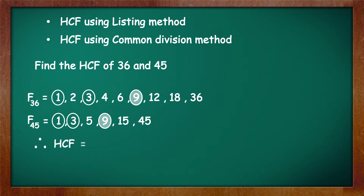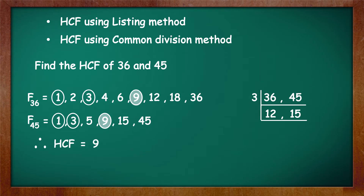Therefore, HCF is equal to 9. To use the common division method, we divide 36 and 45 by the smallest common factor of both the numbers, which is 3. 36 divided by 3 is equal to 12 and 45 divided by 3 is equal to 15. Now divide 12 and 15 by the smallest common factor, which is again 3. 12 divided by 3 is equal to 4 and 15 divided by 3 is equal to 5. Since 4 and 5 do not have any common factors, we cannot divide further and the HCF will be the product of the common factors 3 and 3.